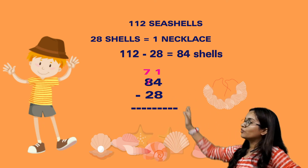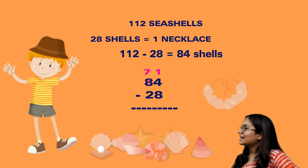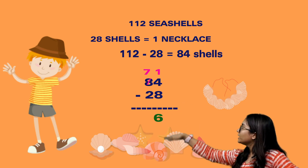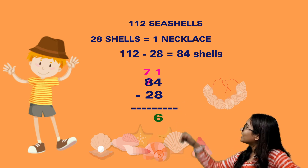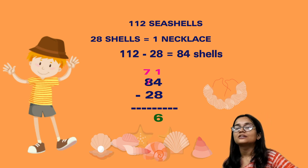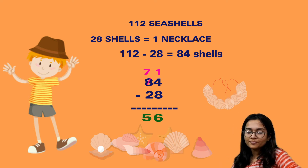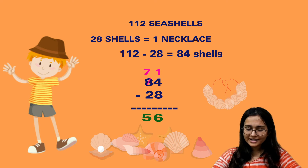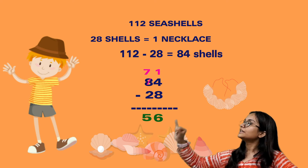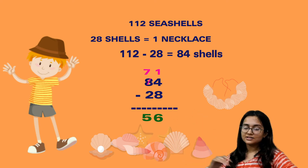From 84 minus 28: we take a carry over, so 14 minus 8 is 6. On the other side, 7 minus 2 gives 5. So the answer is 56 shells remaining after the second necklace.